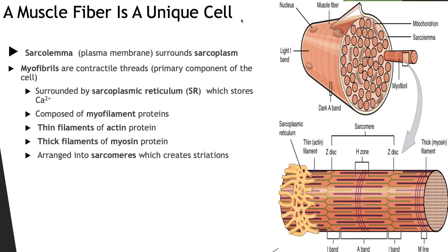Muscle fibers are unique cells. A single skeletal muscle is composed of large bundles called fascicles. Each fascicle is composed of a number of muscle cells, also called muscle fibers, because they are long and cylindrically shaped. Each muscle fiber is composed of myofibrils. Each myofibril is composed of two contractile proteins called myofilaments. The thick myofilaments are called myosin, and the thin myofilaments are called actin. The myofilaments of myosin and actin are arranged in overlapping patterns to create hundreds of thousands of functional units called sarcomeres.